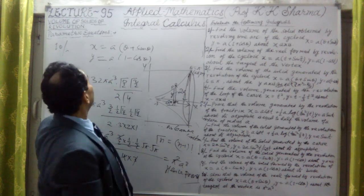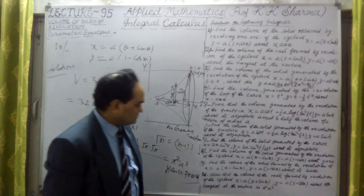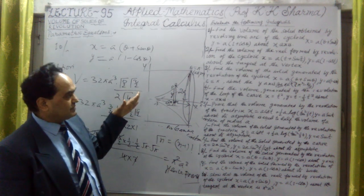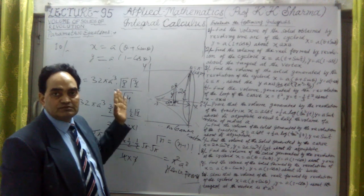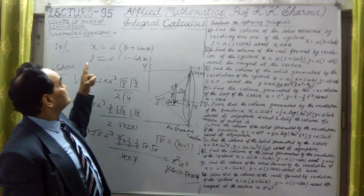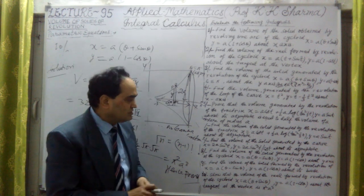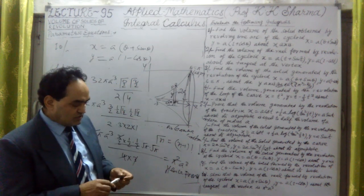Now this is about parametric equations. Next I will take polar equations. After Cartesian, this was now parametric. Next I will take polar. So in this we have volume of the solids of revolution by polar equations is the next topic. Maybe that I will discuss in the next lecture.